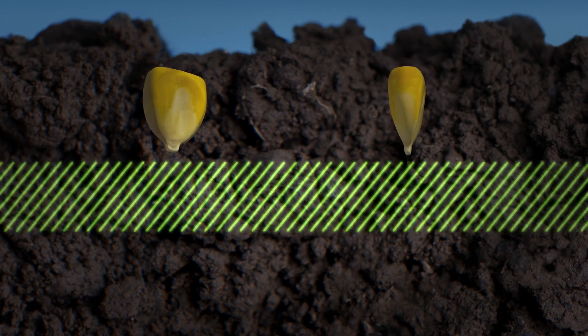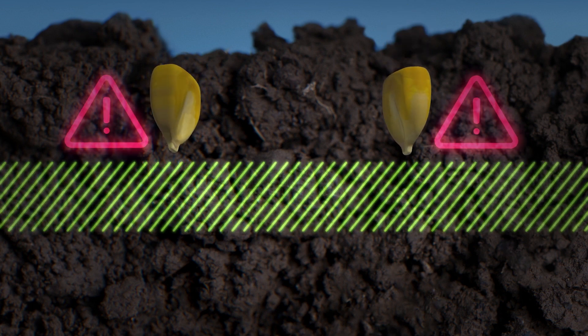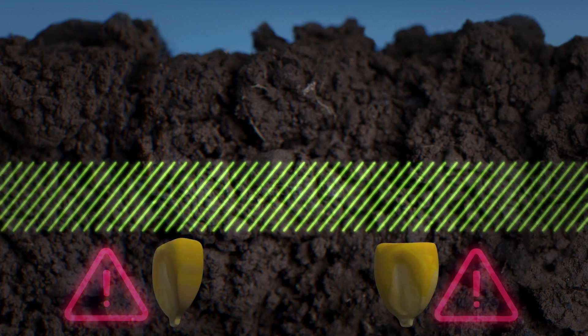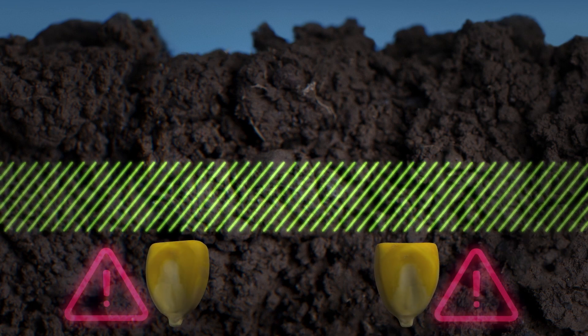Seeds planted too shallow will have their roots exposed, and seeds planted too deep will use too much energy simply trying to grow out of the dirt.